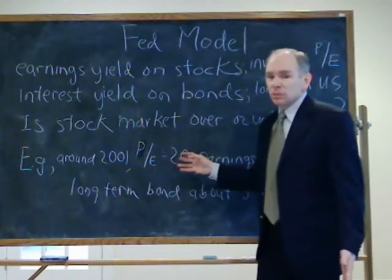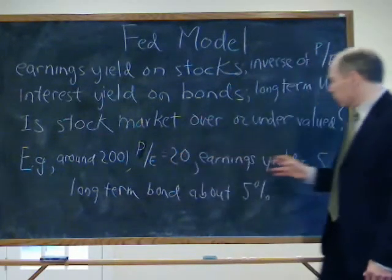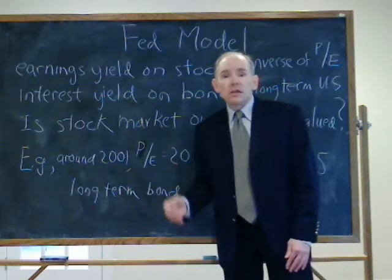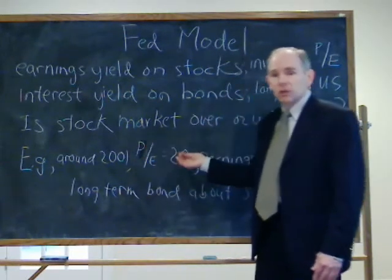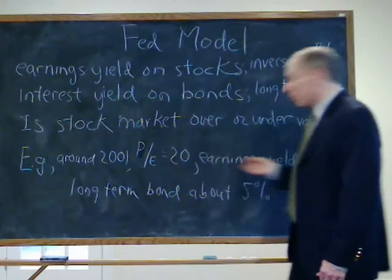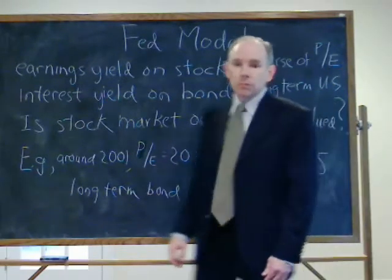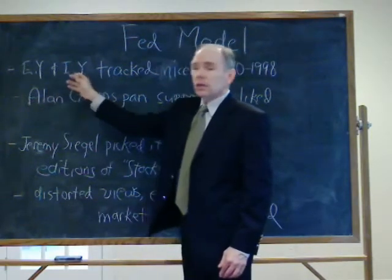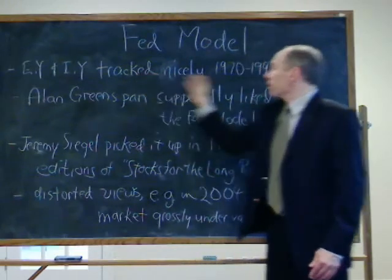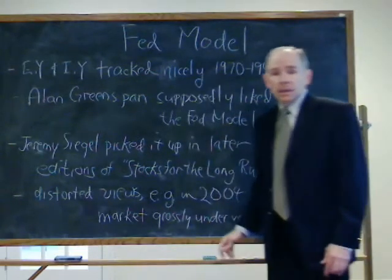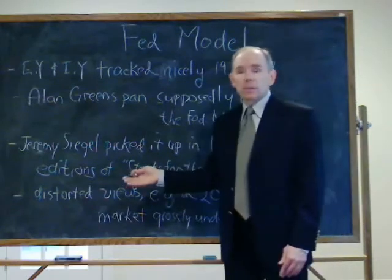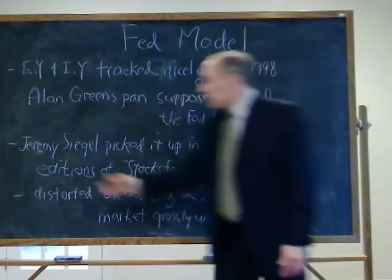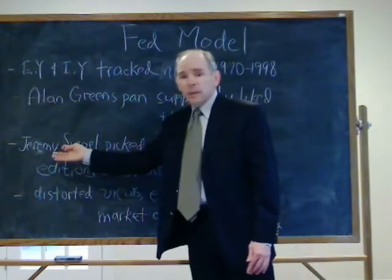Let's say the P/E ratio had been a lot lower — say 12. Then the earnings yield would have been much higher, around 8 or 9, meaning the stock market was undervalued and you should buy stocks. That would push up stock prices, push up the P/E ratio, and lower the earnings yield until it got down to the interest yield on bonds. The Fed model — the interplay between the earnings yield and the interest yield — tracked very nicely from about 1970 to 1998. People in the Federal Reserve System picked up on the relationship, and supposedly Alan Greenspan himself liked this model and thought it had a lot of content.